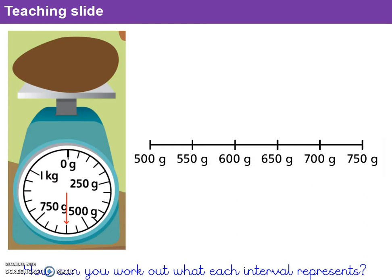So how can you work out what each interval represents? Find two labeled intervals next to each other, find the difference between those two marked amounts, count the number of unlabeled intervals between them, then divide the difference by the number of intervals to identify the value of each interval. In this case, the intervals are worth 50 grams each.